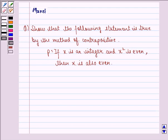Hello and welcome to the session. My name is Mansi and I am going to help you with the following question. The question says, show that the following statement is true by the method of contrapositive. The statement P is: if x is an integer and x square is even, then x is also even.